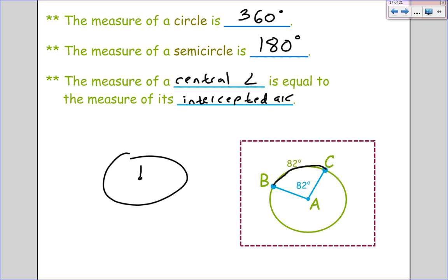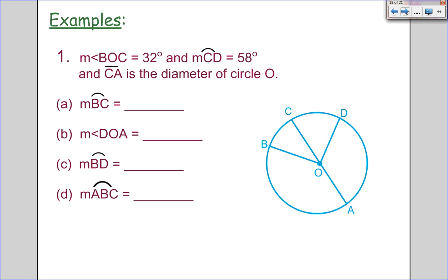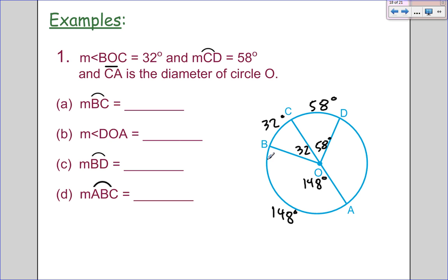Let's try three problems. We're given that angle BOC equals 32 degrees and arc CD measures 58 degrees. Since BOC is a central angle of 32 degrees, the intercepted arc is also 32 degrees. Since the intercepted arc is 58 degrees, the central angle is also 58 degrees. Notice here there's a diameter, making a straight line, so it has to add to 180. So 180 minus 32 gives 148 degrees, and that will be true for the intercepted arc. Here is also a straight line, so we get 122 and 122.